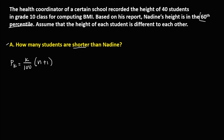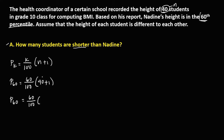N is the total population. Since we have 40 students, N is equal to 40. Since Nadine's height is in the 68th percentile, K is equal to 68. So we divide 68 by 100, then multiply by N plus 1, which is 41.